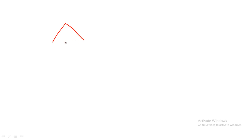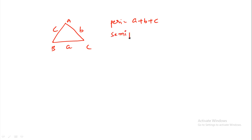For triangle ABC with sides small a, b, c, the perimeter is a plus b plus c. The semi-perimeter is s equals a plus b plus c divided by 2. We denote the semi-perimeter as s.